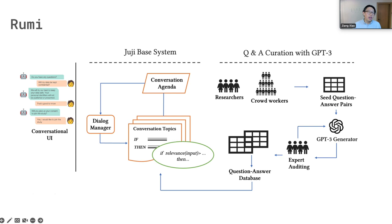So we built Rumi, a chatbot that aims to simulate an in-person informed consent process experience, where it can go through the consent form section by section, ask if the participant has any questions, and make clarifications. To build a capable conversational AI, we leveraged an expert-in-the-loop framework with a large language model to make Rumi more knowledgeable while always delivering answers grounded on the consent form.